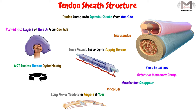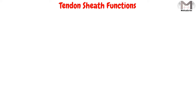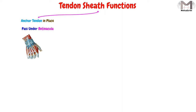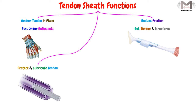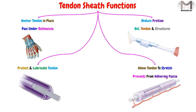Finally, the tendon sheath has four main functions. The first is that it anchors the tendon in its place as it passes under the retinaculum. The second function is that it reduces friction between the tendon and the surrounding structures. The third function is that it protects and lubricates the tendon. The fourth and last function is that it allows the tendon to stretch and prevents it from adhering to the overlying fascia.